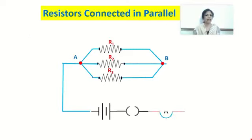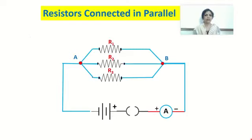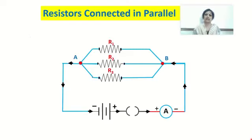To complete the circuit diagram, we will first draw a battery, then connect a plug key, then an ammeter in series. Check the polarity of the ammeter and the battery — the positive terminal is connected to the positive of the ammeter. This is the positive terminal of the battery and this is the negative terminal of the battery. This is how we have connected the devices in an electrical circuit.